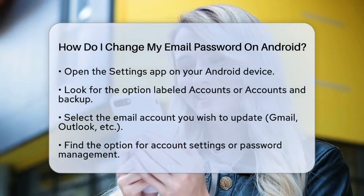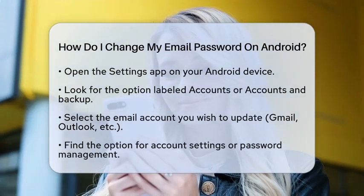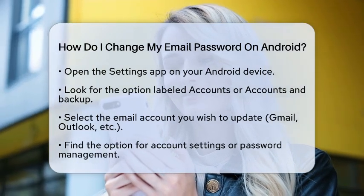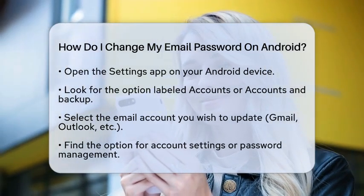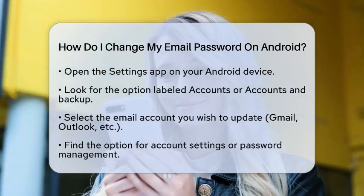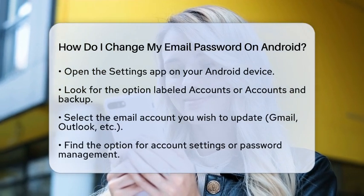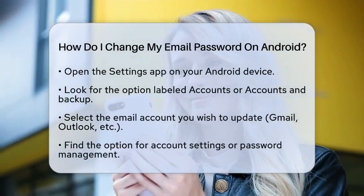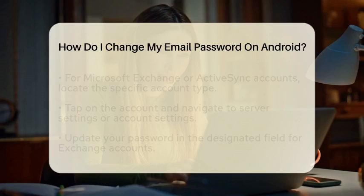Next, look for the option labeled Accounts or Accounts and Backup. The exact wording may vary based on your device model, but it should be easy to find. Once you are in the Accounts section, find and select the email account you want to update. This could be a Gmail account, Outlook account, or any other email service you are using.